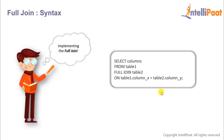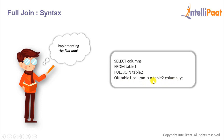Let's have a look at the syntax. We'll start with the SELECT keyword first and then give the list of columns, following which we'll give the FROM keyword and then the name of the first table. Then we'll use the keywords FULL JOIN and give the name of the second table, after which we'll use the keyword ON. This ON keyword tells SQL that the full join needs to be done on some condition — that condition being values from column X of table 1 should equal values of column Y from table 2.